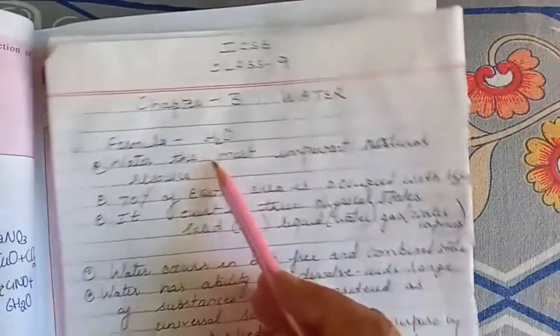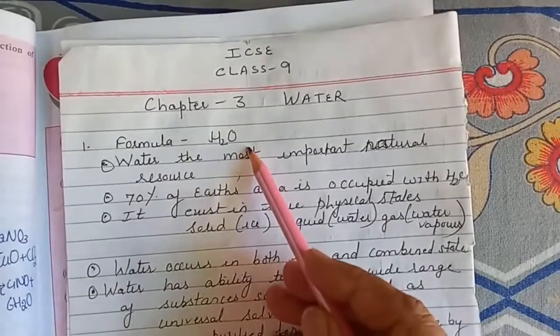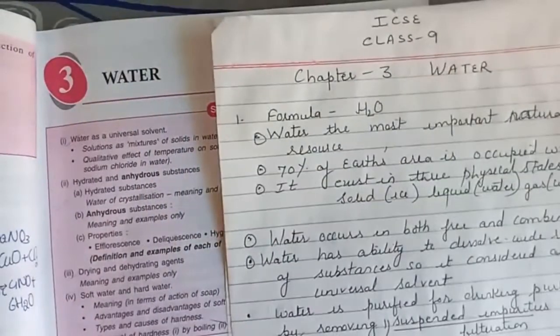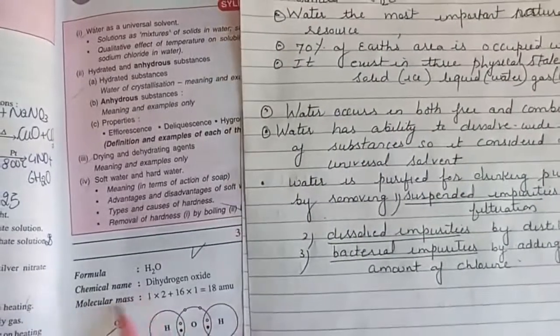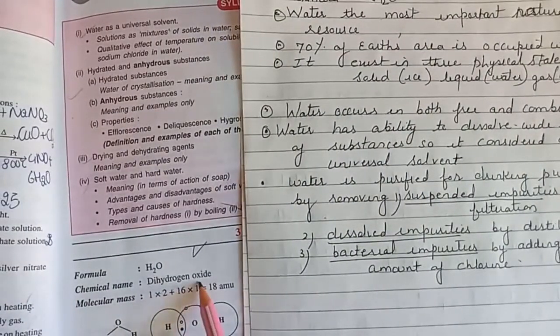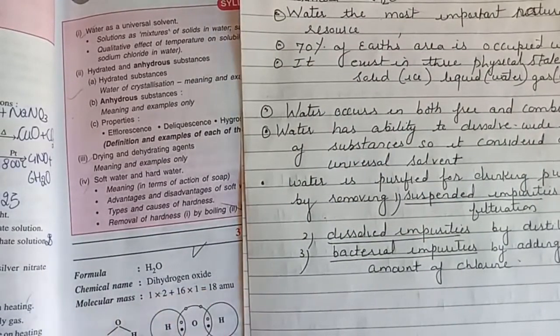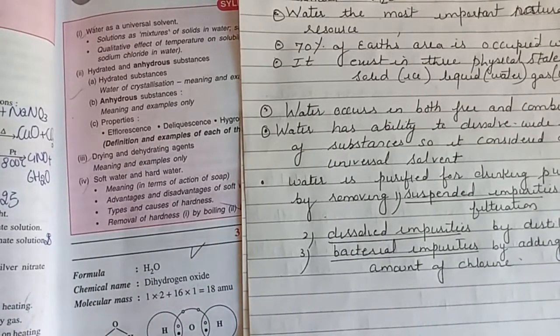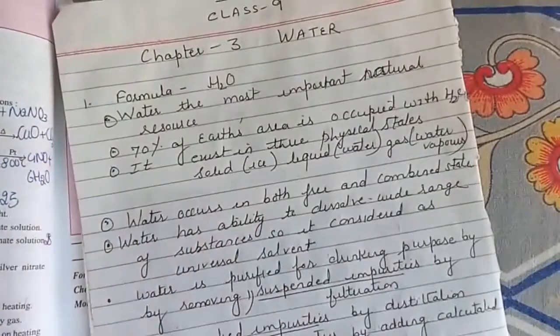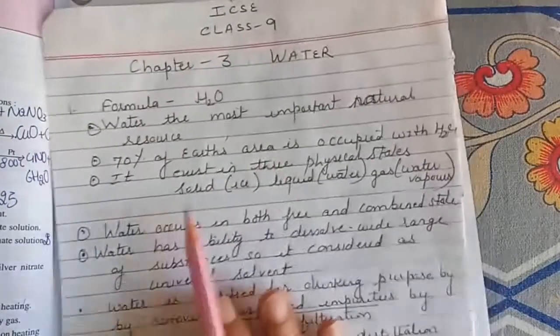You know water, the formula is H2O, and the chemical name is dihydrogen oxide. The structure and all I will explain to you later. Today just see the explanation of water.